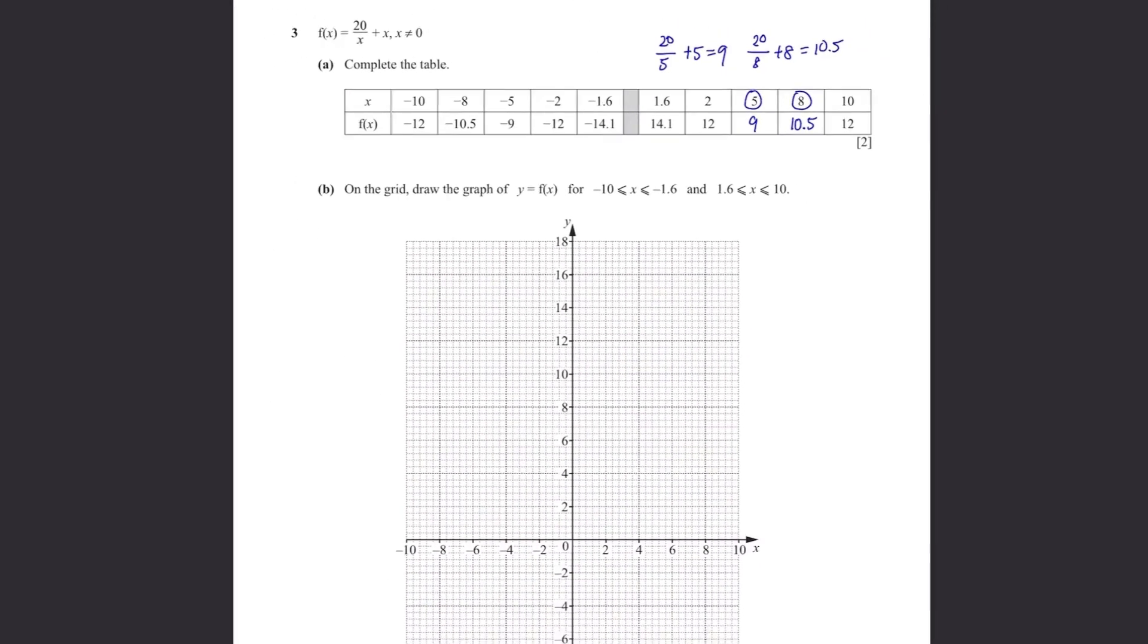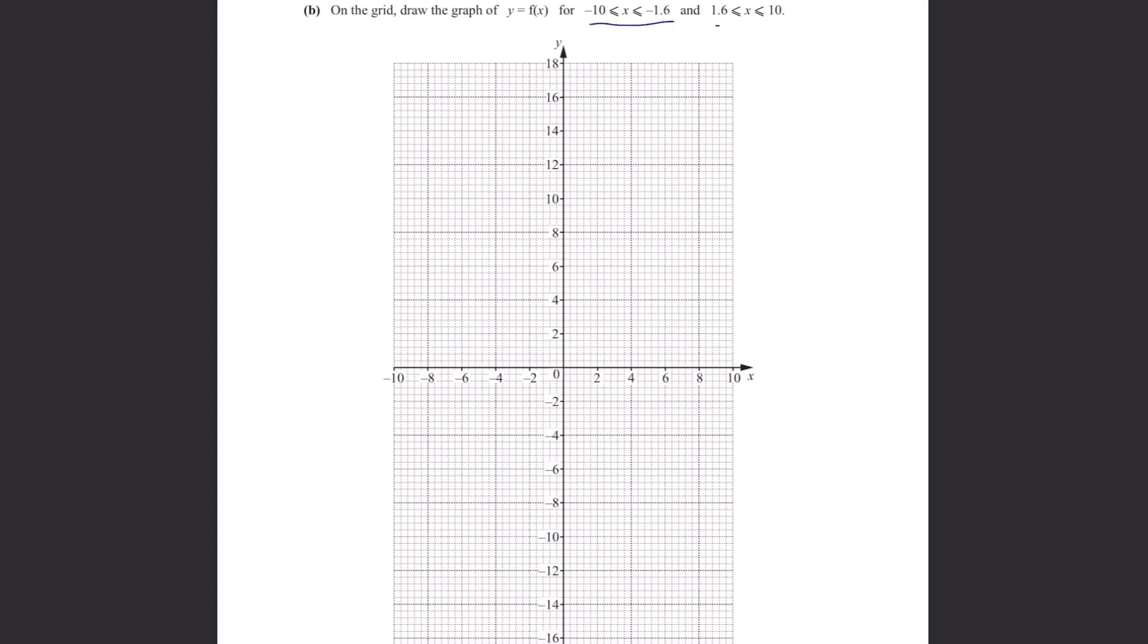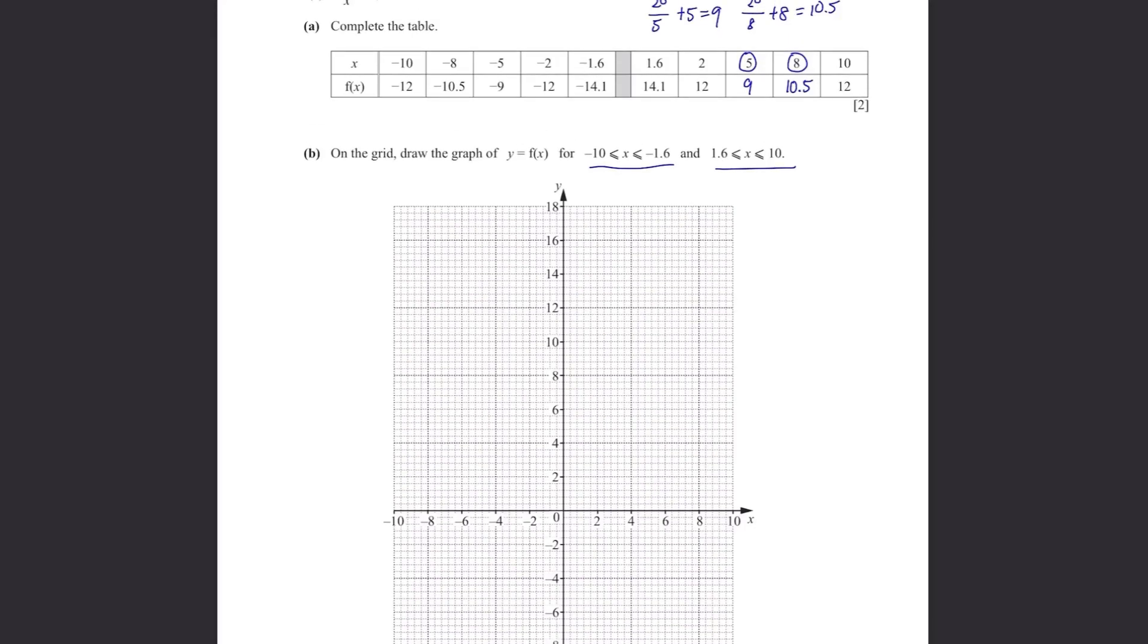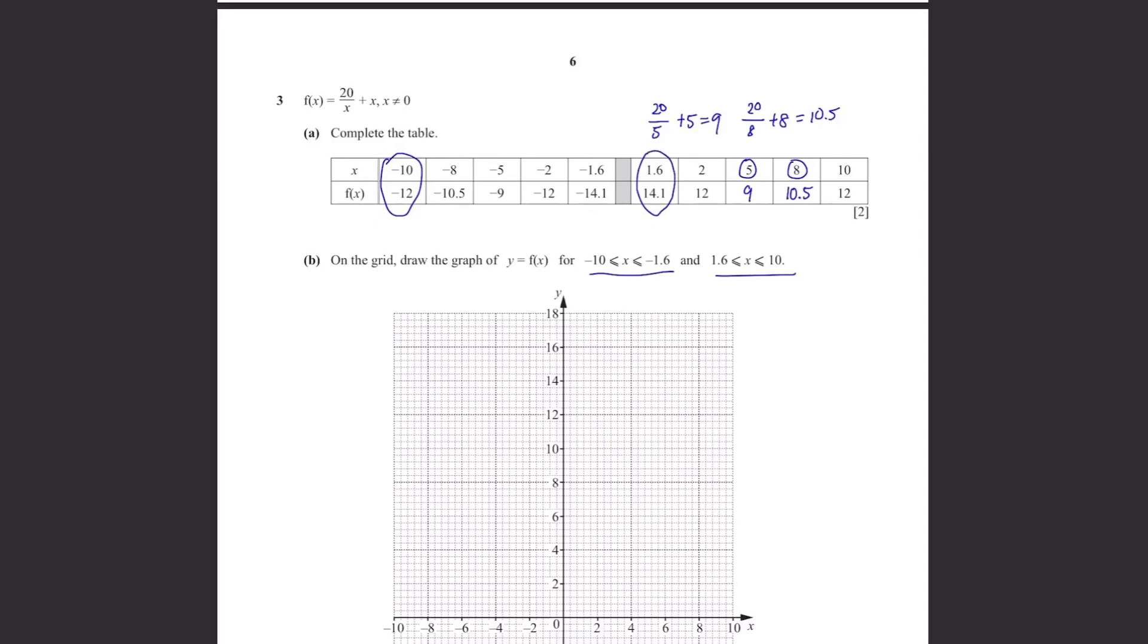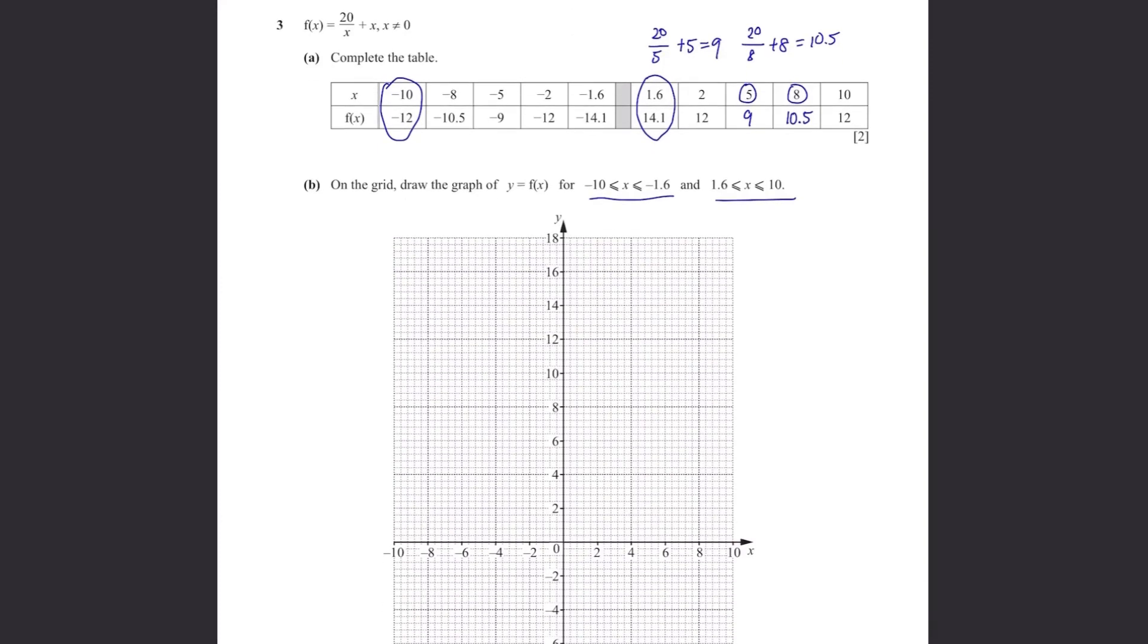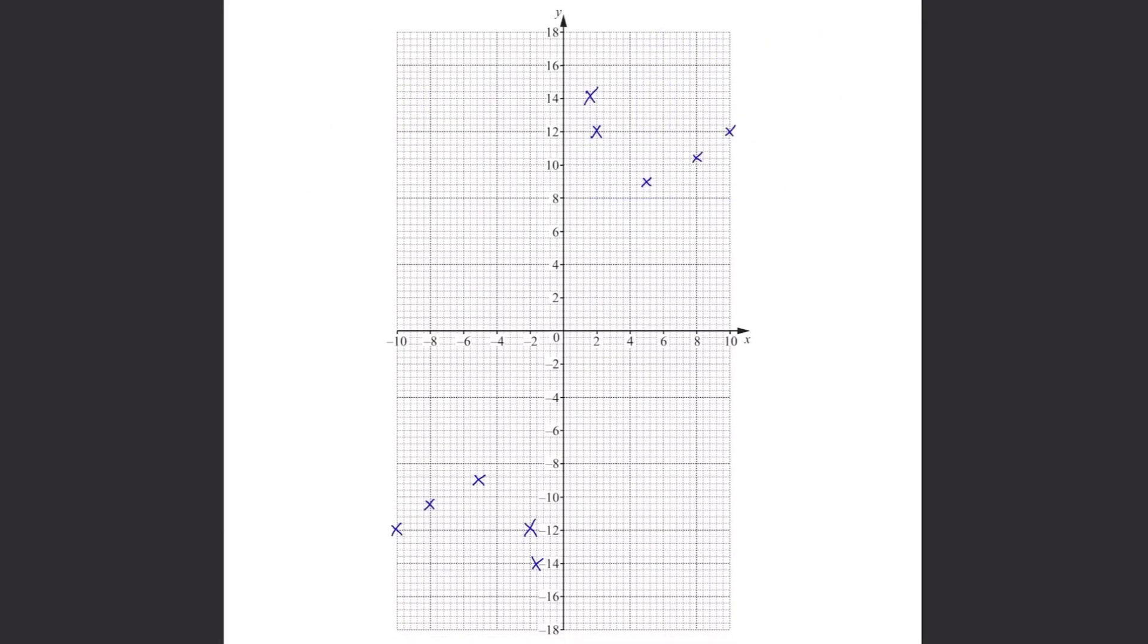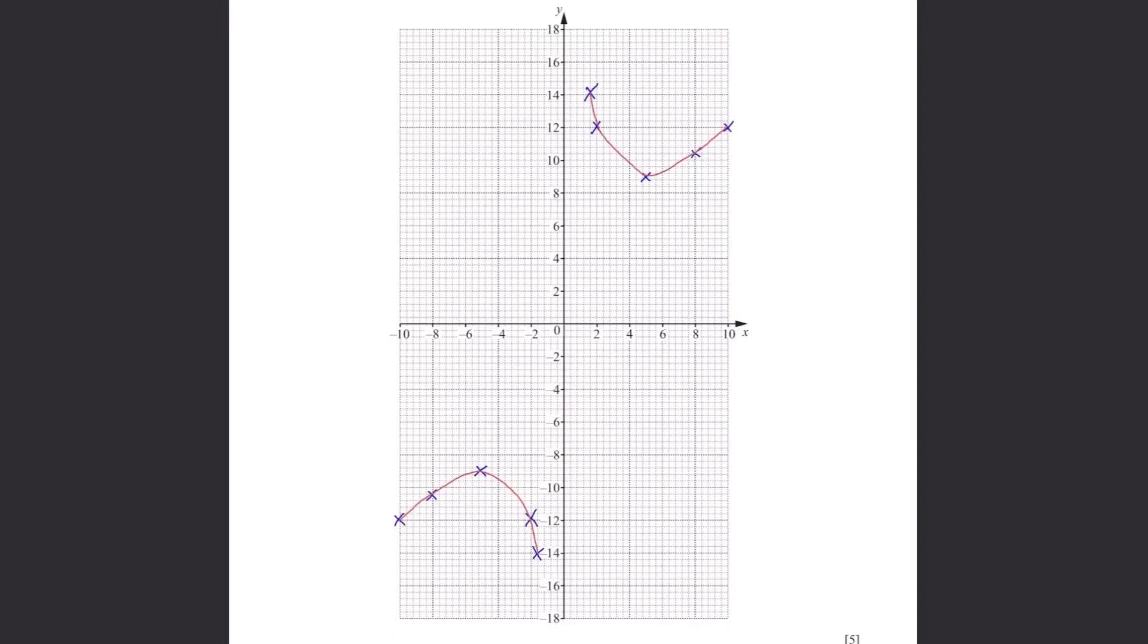Part B. On the grid, draw the graph of y equals to f(x) for this range. This is quite simple as well. Just plot the graph according to the table above. For example, x is negative 10 and f(x) is negative 12 so it's here. From the positive side, let's plot this. X is 1.6 and f(x) is 14.1 so it's here. If you plot all of those points, we have this. Now time to connect the dots and remember we're drawing a curve here. Never use your ruler and connect them smoothly and you must go over all the points. This needs practice so try drawing some random smooth curves if your graph doesn't look neat.